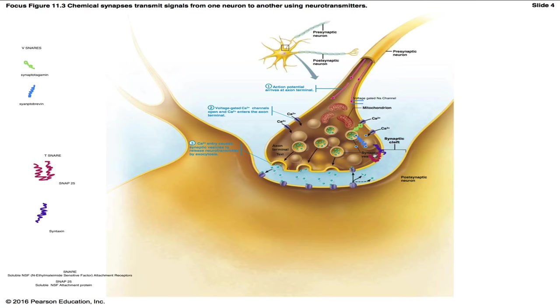If you notice, the syntaxin, the SNAP25, and the synaptobrevin are all alpha helixes.